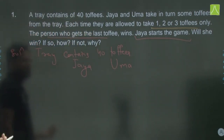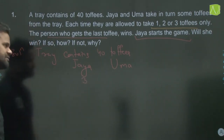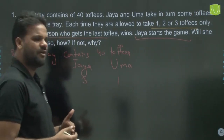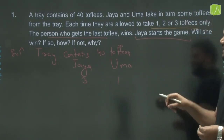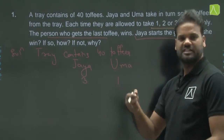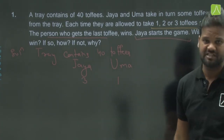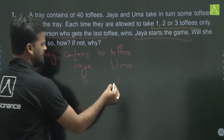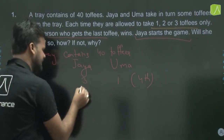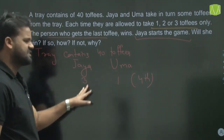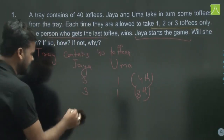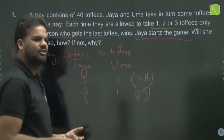We need to make a combination such that in the last turn, Uma picks the last toffee. If Jaya picks three and Uma picks one, that's four total — a multiple of 4. Again Jaya picks three and Uma picks one, that's the 8th toffee. So toffees at multiples of 4 will always be picked by Uma.